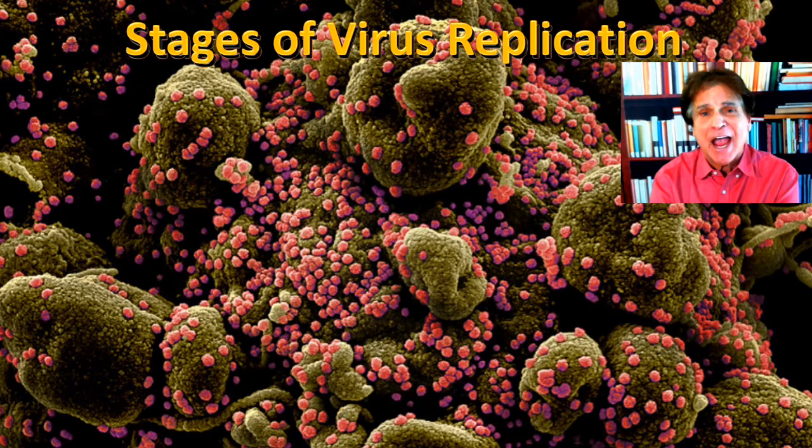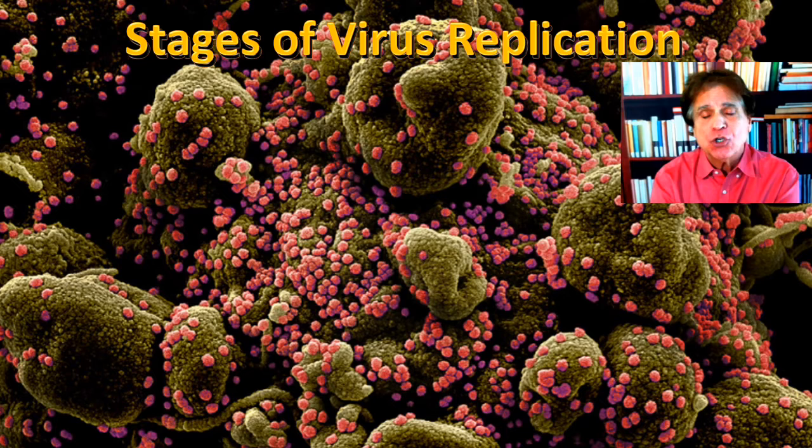Although viruses do not exhibit characteristics of living things, such as using energy or growth and development, they do share one common feature, and that is to replicate. Biologists like to use patterns to understand what they're studying, and they look at the stages of replication in the virus. Although they may vary from species to species, there are certain characteristics which are in common. I'd like to address in this presentation those six stages of virus replication.